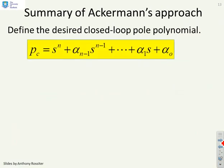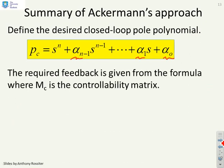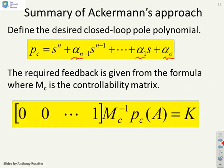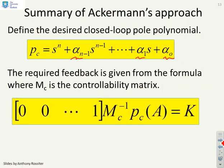So, a summary of Ackermann's approach: define your desired closed-loop pole polynomial using coefficients alpha_{n-1} down to alpha_0. Then the required state feedback is given by Ackermann's formula, where M_c is the controllability matrix. The key steps are inverting the controllability matrix and evaluating PC of A — substituting the matrix A into the desired closed-loop pole polynomial.